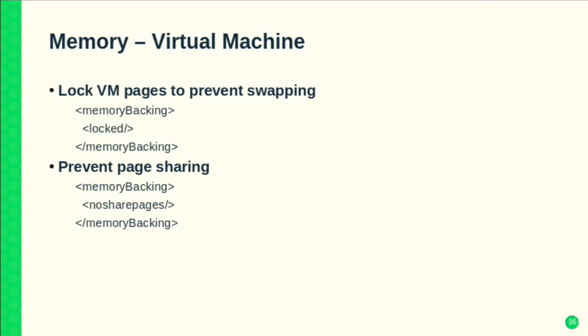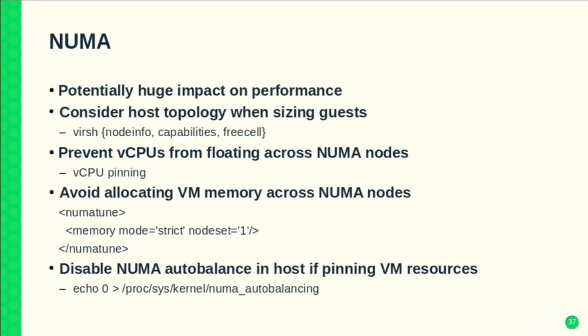A couple of memory items on the VM side: if you don't want swapping of VM memory to disk on the host, you can set the 'locked' attribute in the memory backing config. And if you're using KSM but have a VM or workload you don't want merged — for example a more security-sensitive VM — you can set the 'nosharepages' setting in the memory configuration.